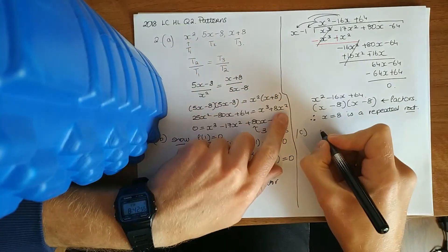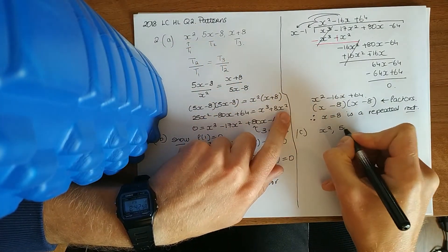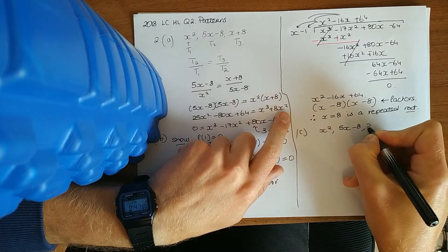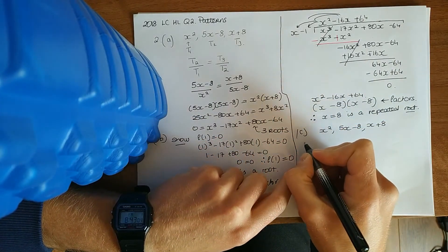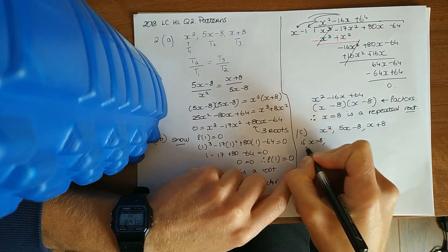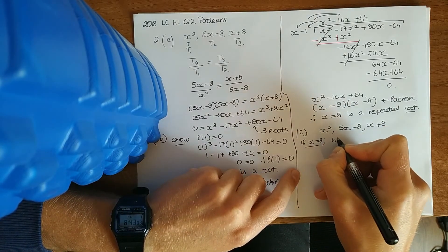So x squared plus 5x minus 8, x plus 8. If we sub in x equals 8, that means our term is 8 squared, which is 64.